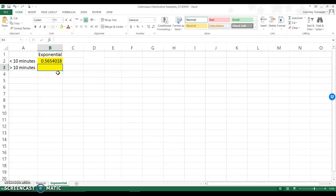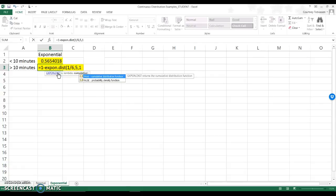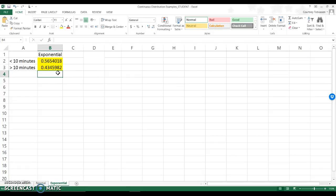If I want to know above 10 minutes, it is going to be equals 1 minus expon.dist. Again, you can do this any way that you want. 1 for true. And that is the probability of it taking above 10 minutes.